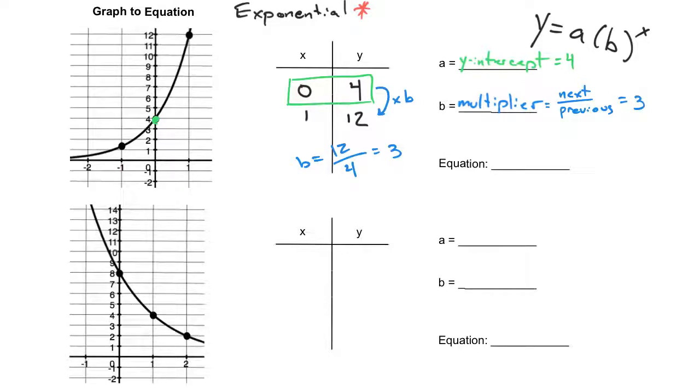And that's all the information we really need to write our equation. It's y equals our A value, which is 4, multiplied by our multiplier to the x power, and we found our multiplier to be equal to 3. That would be our equation.